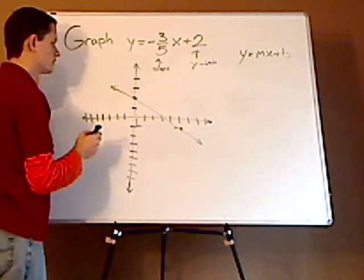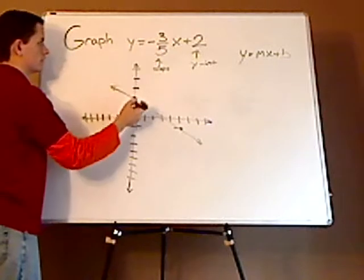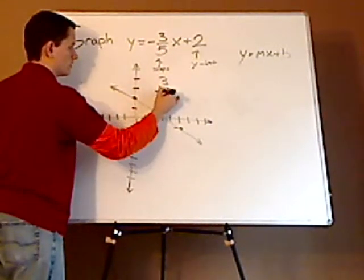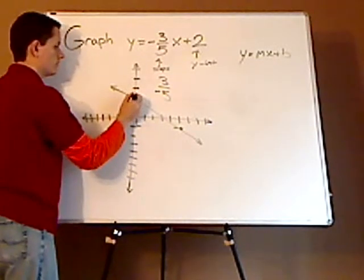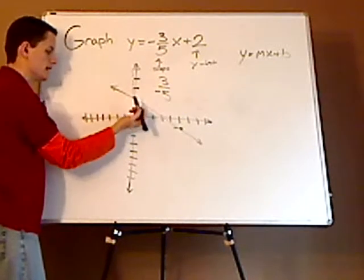Now if you really wanted to, what you could have done is the other way. The other way would be 3 over negative 5. So you'd go up 3: 1, 2, 3. And then since it's negative,